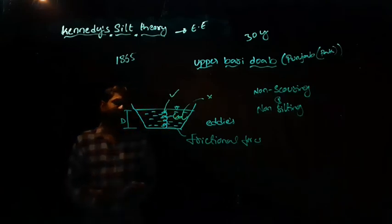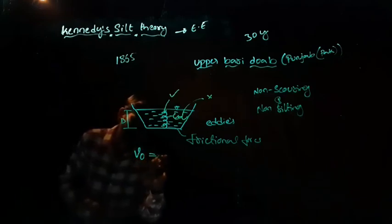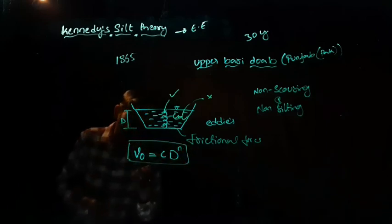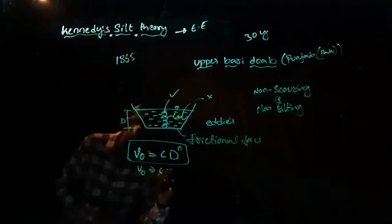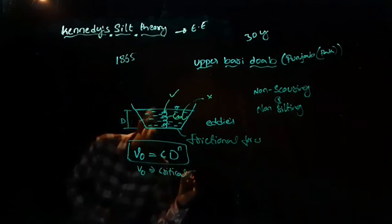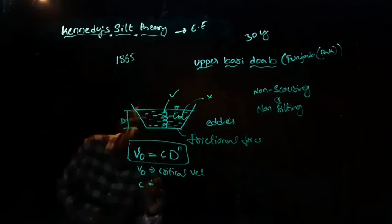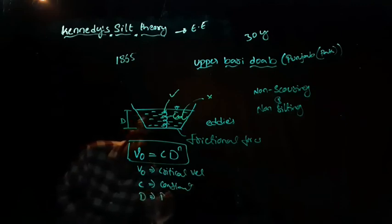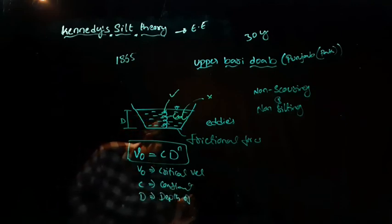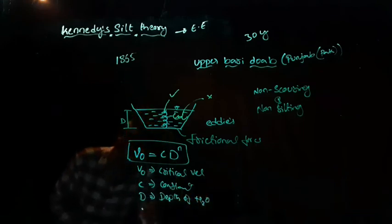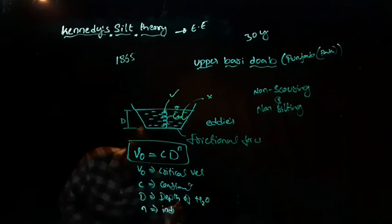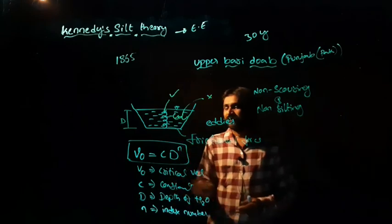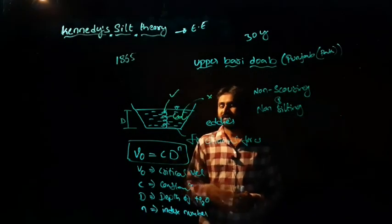According to him, he gave a theory that is V0 equal to c d to the power of n is a formula, where V0 is equal to critical velocity, c is constant, d is the depth of water, and n is the index number. According to him, V0 equal to c d to the power of n, where V0 equal to critical velocity.